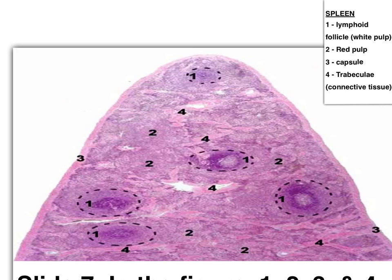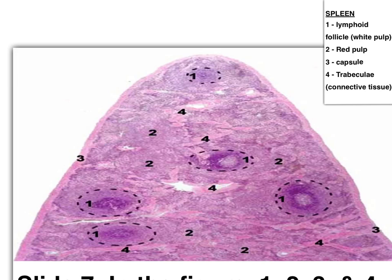This section is for the spleen because it has scattered follicles. If you look at the follicles you can identify a follicular arteriole — so it is the spleen. Number 1 is the white pulp or the lymphoid follicle. Number 2 is the area between the follicles, which is the red pulp. Number 3 is the thick capsule. Number 4 is a trabecula — red stained connective tissue that mainly comes from the hilum.